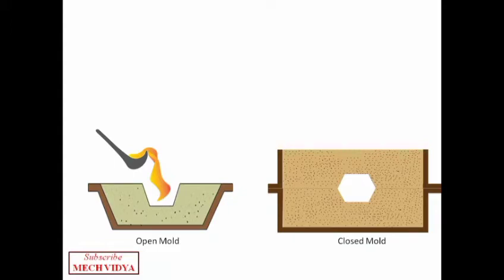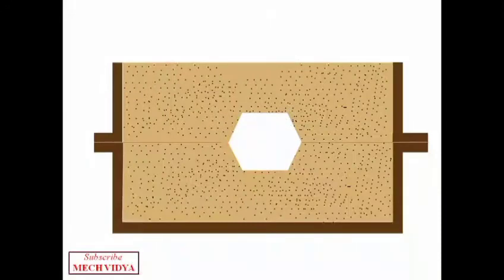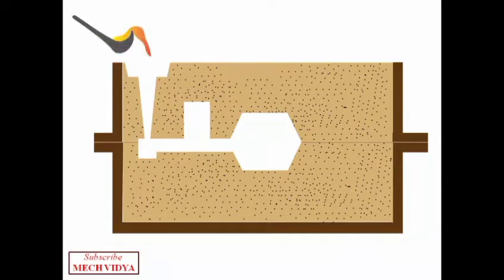But when it comes to closed molds, since the mold cavity is covered from all sides with sand, we cannot pour any molten metal directly into the mold. So here comes the role of gating systems. A gating system is a channel through which molten metal flows from the pouring cup to the mold cavity.